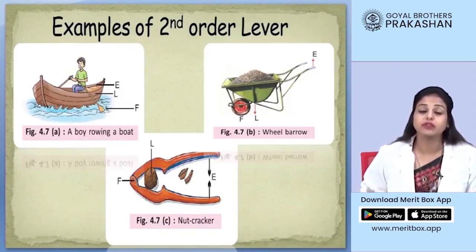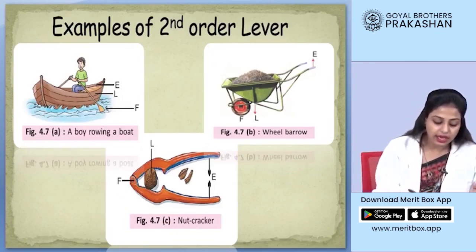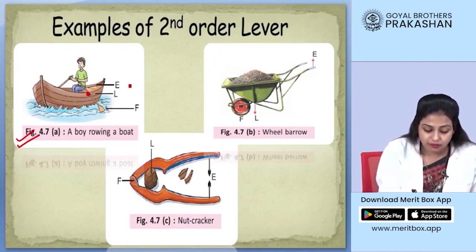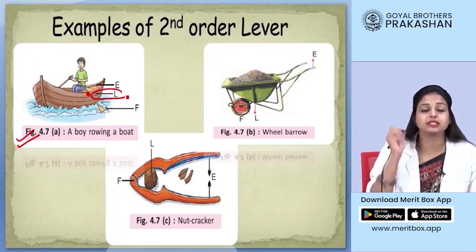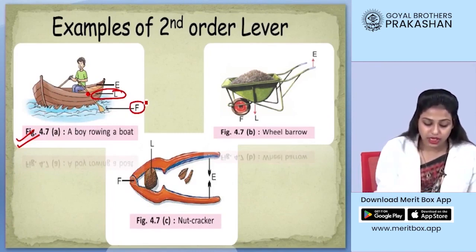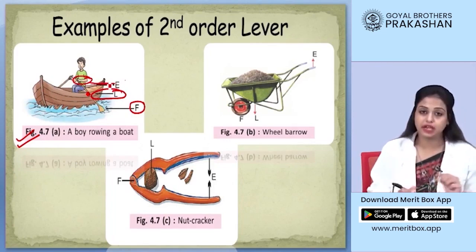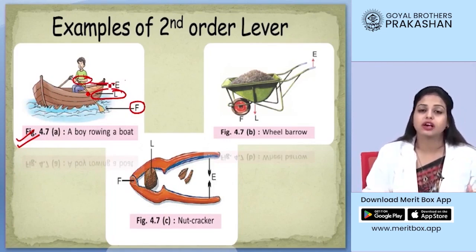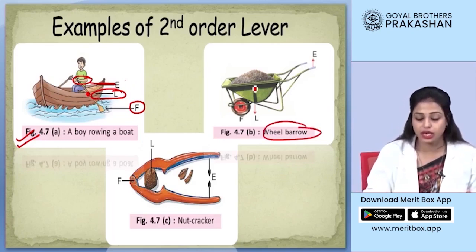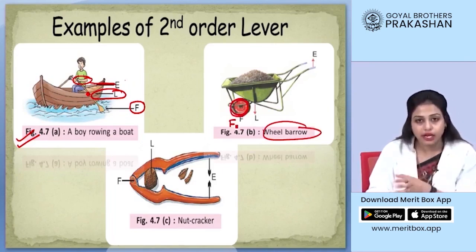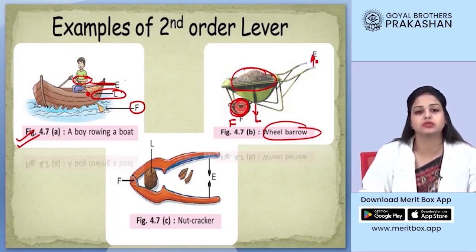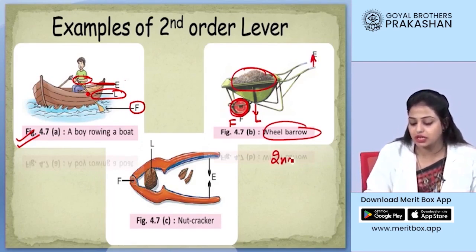There are various examples of second class lever in daily life. When a boy is rowing a boat, the edge of the boat acts as the fulcrum, and the effort is applied by the boy's hands on the oar. So he is using a lever of second order. Another example is a wheelbarrow, used to carry heavy stuff like sand. The wheel acts as the fulcrum, the load is inside the barrel, and the effort is applied by the hands at the handles — this is also an example of a second order lever.